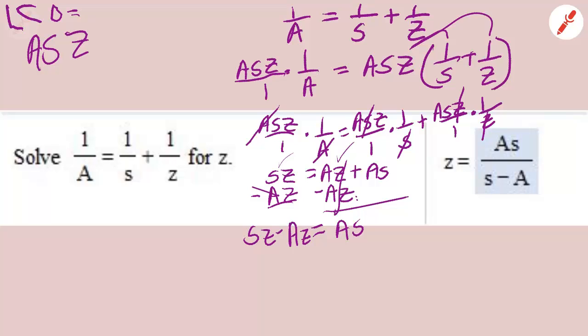Now, on the left, I pull out Z as a common factor. S minus A times Z equals AS. Then I divide both sides by S minus A. So the S minus A's cancel out here, leaving me with Z equals AS over S minus A.